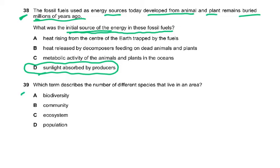Question 39 asks which term describes the number of different species that live in an area. The answer is biodiversity — the number of different trees, birds, insects, bushes, herbs, and plants living in an area.